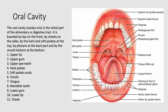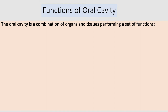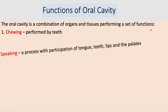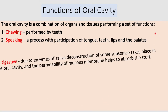The oral cavity is a combination of organs and tissues performing a set of functions. The first is chewing, which is performed by the teeth. Then we have the important function of speaking — vocal function — which is performed with the help of the teeth, tongue, lips, and the palates.